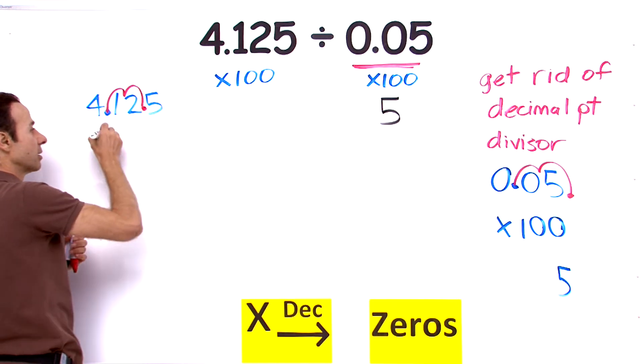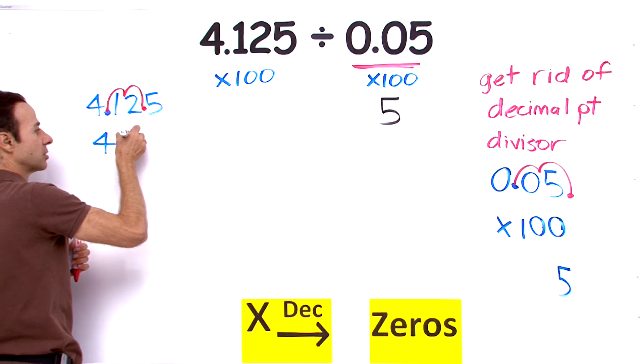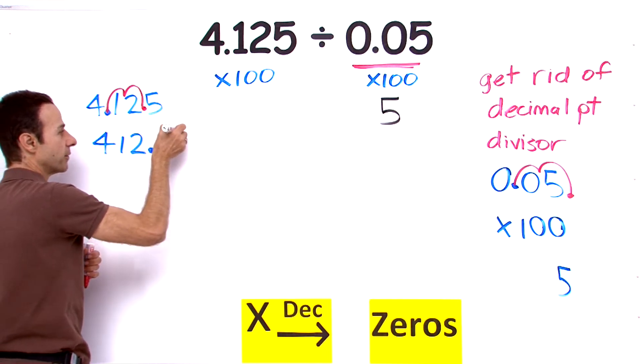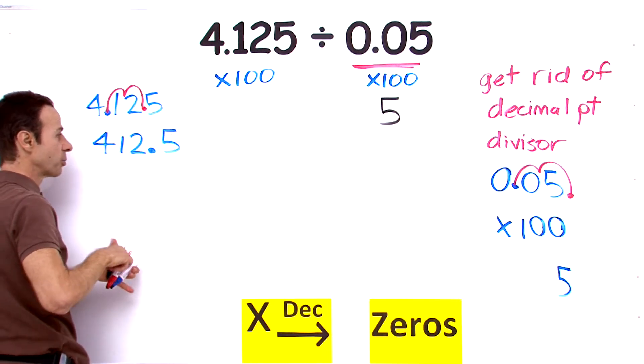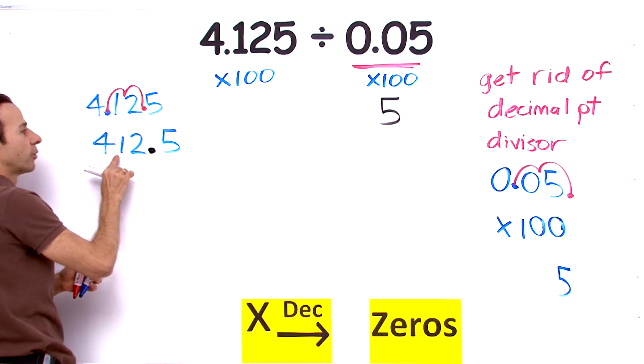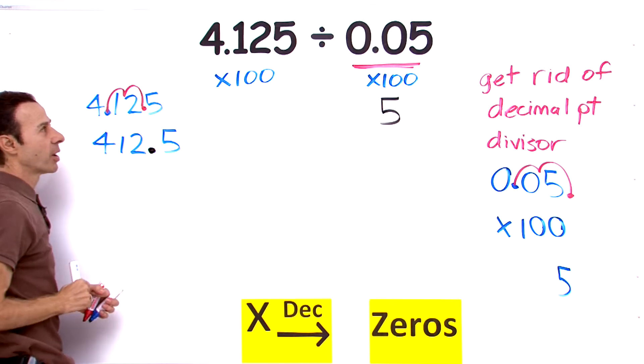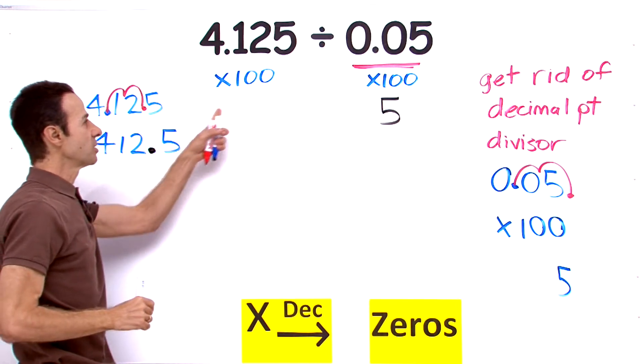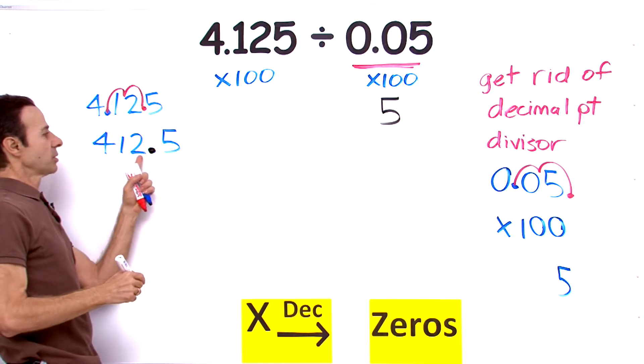So this will become, if I rewrite it, 412.5. That is our new decimal point. Let me just highlight it there in black. 412.5. That is our new number because we just multiplied by 100.